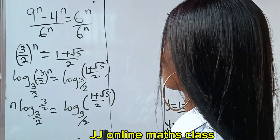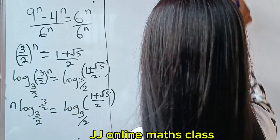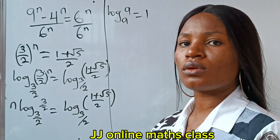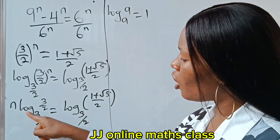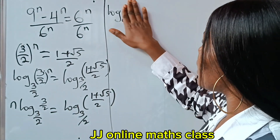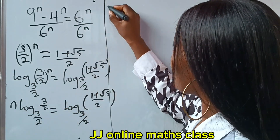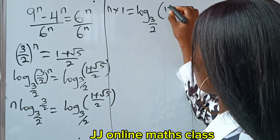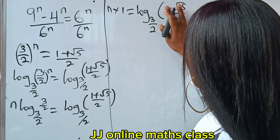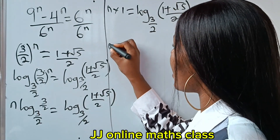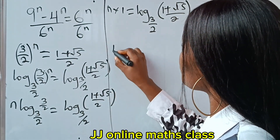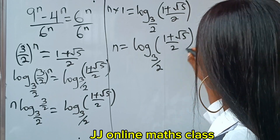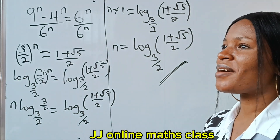Using the law that log base a of a equals one, we have log_(3/2)(3/2) = 1. Therefore n × 1 = log_(3/2)((1 + √5)/2). So our final answer is n = log base (3/2) of (1 + √5)/2. Thank you so much for watching — have a bright day!